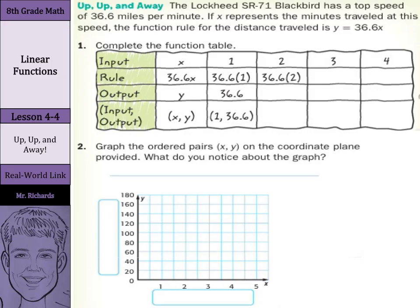A real-world link is up, up, and away. The Lockheed SR-71 Blackbird has a top speed of 36.6 miles per minute. If x represents the minutes traveled at this speed, the function rule for the distance traveled is y = 36.6x.